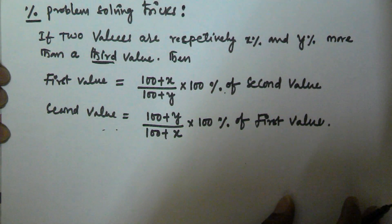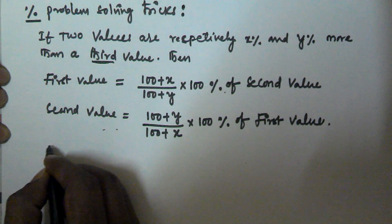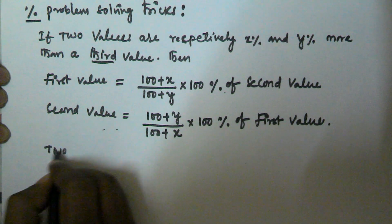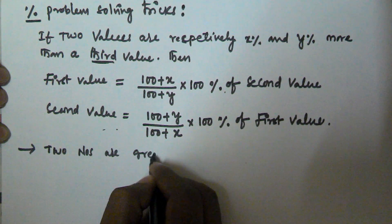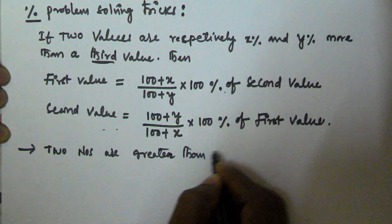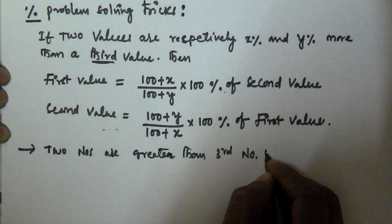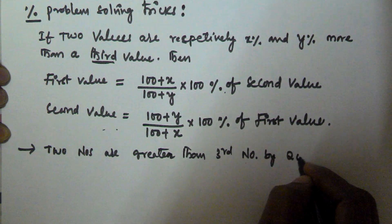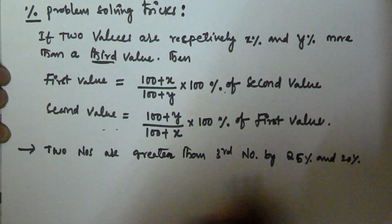Let us solve a problem based on this concept. Two numbers are greater than a third number by 25 and 20 percentage respectively.